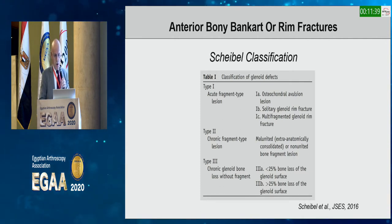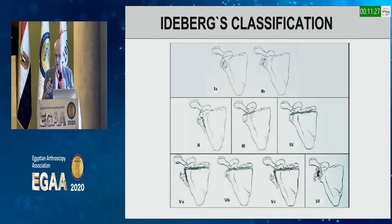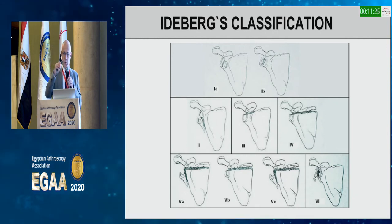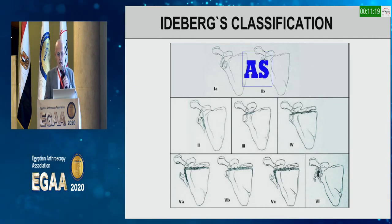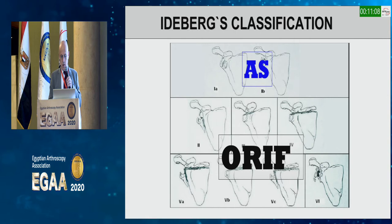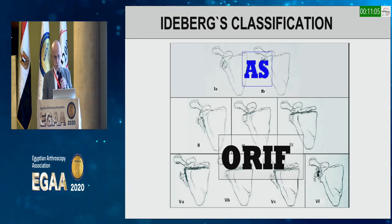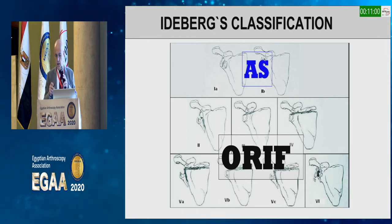Chronicity is important. The Ideberg classification creates a threshold for arthroscopic versus open treatment: type 1a or 1b can be treated arthroscopically, especially in the acute phase; all the rest requires open reduction and internal fixation. If we are dealing with a type 1 fracture and want to do arthroscopy, there are some techniques described in the literature, though they are technically demanding.